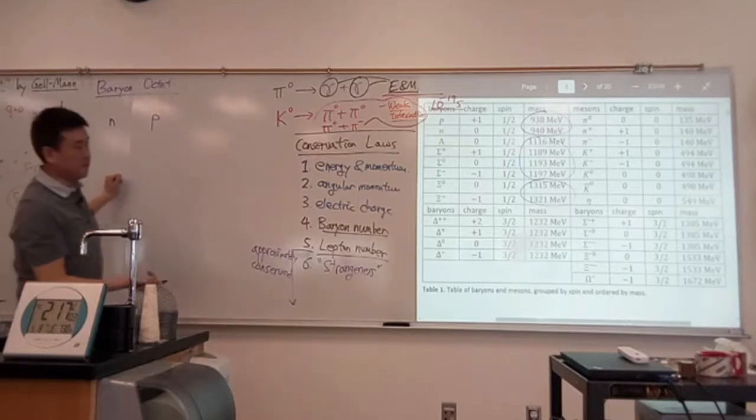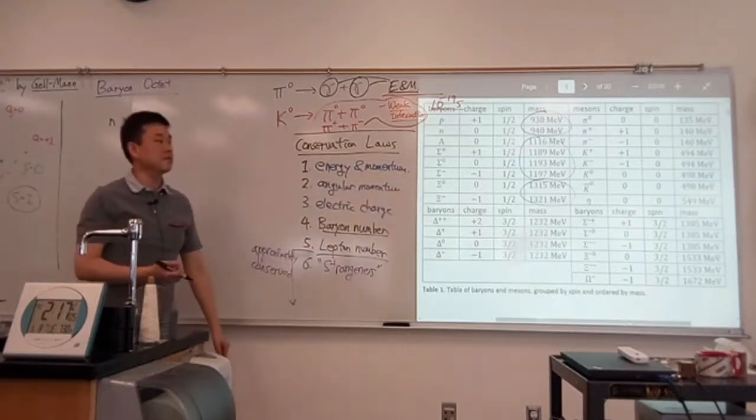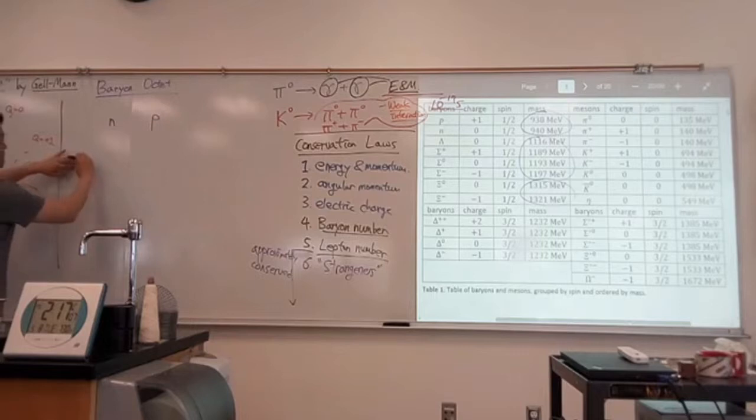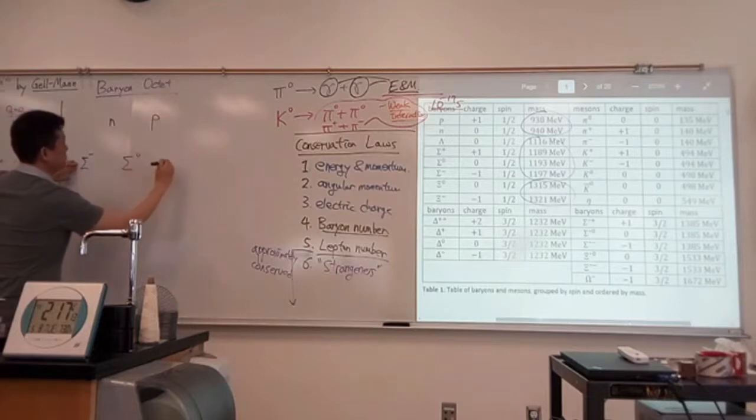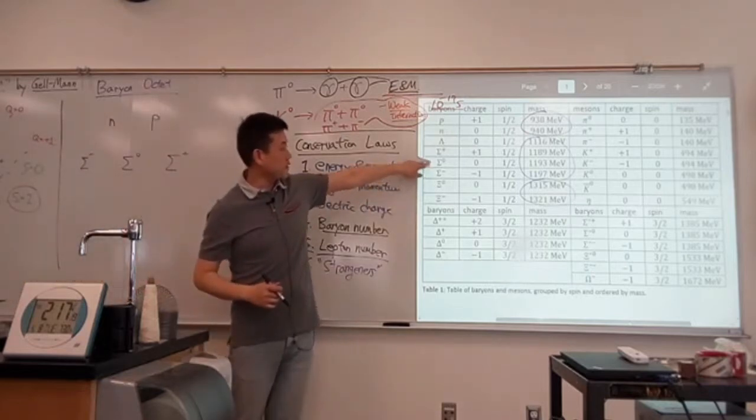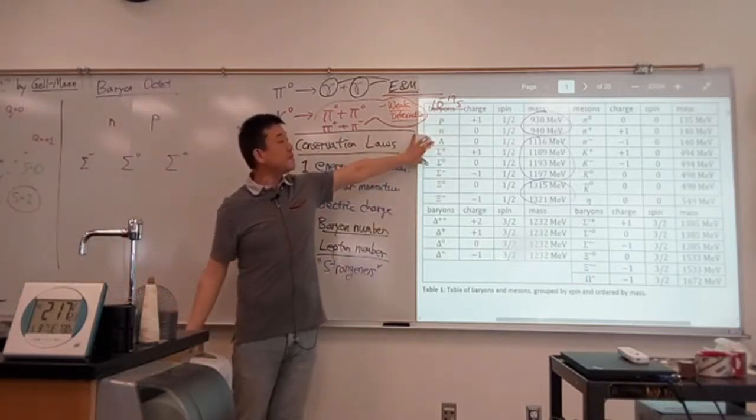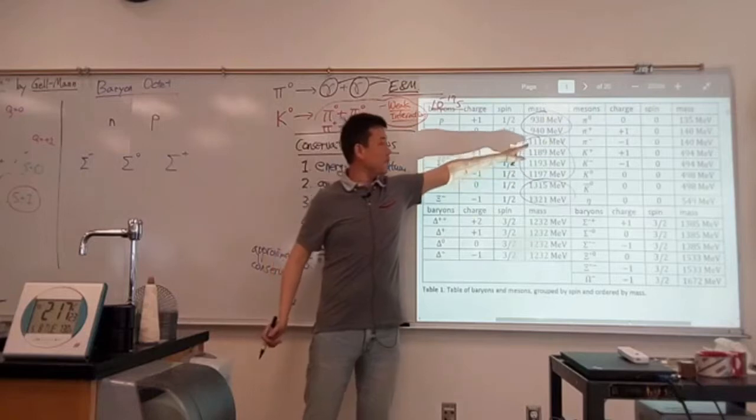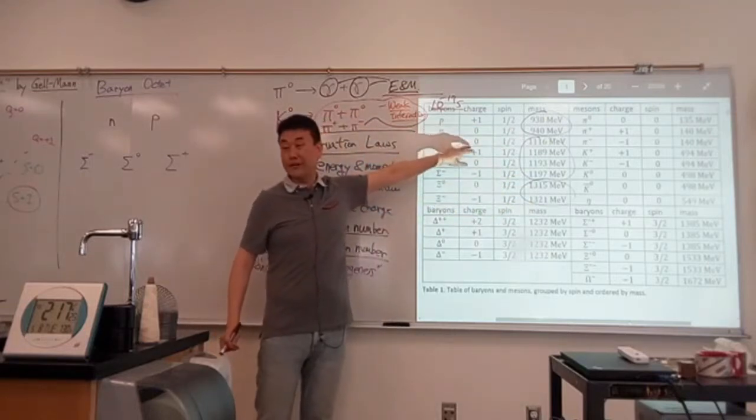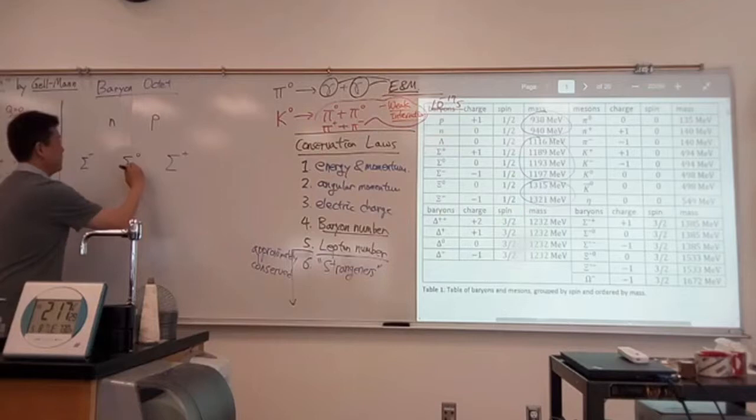Most negative particle is sigma minus. I have neutral sigma and I have positive sigma. And since I have two particles that are definitely different, they have slightly different mass but same charge, so I'll just put lambda in the same kind of box as where I'm putting neutral sigma.